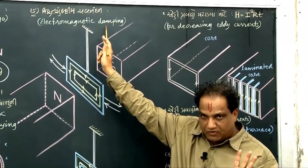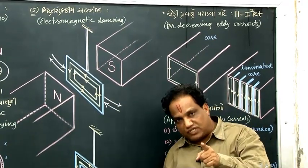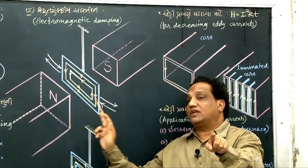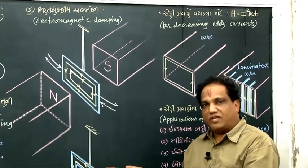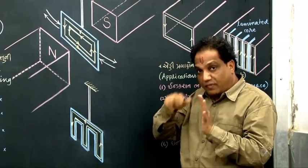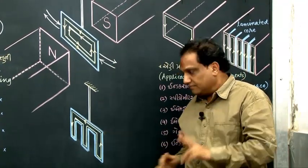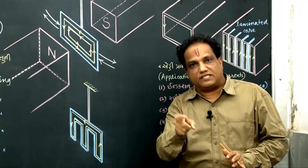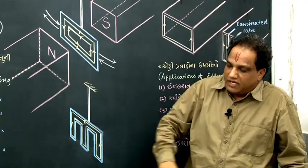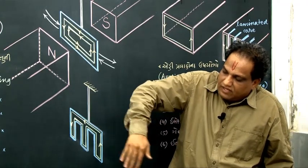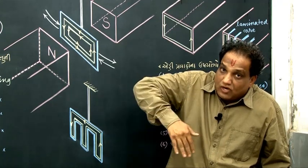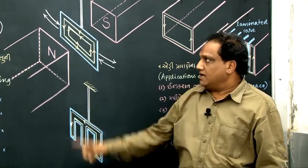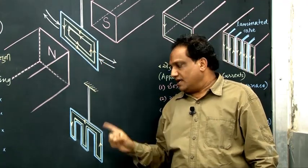Here damping is more because Lenz force is more — because of a greater amount of eddy current — because of greater volume. Now, in place of a solid disc, if you place a slotted disc with decreased volume, then because of less volume there is less eddy current, and such a disc can oscillate for quite a long time. Here electromagnetic damping is more; with the slotted disc, damping is less, so it can oscillate for a long time.